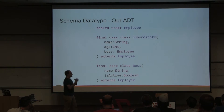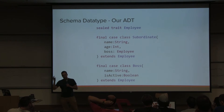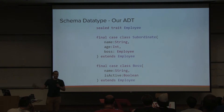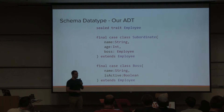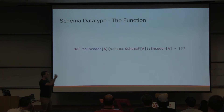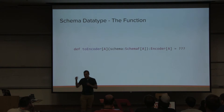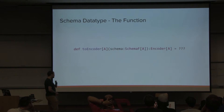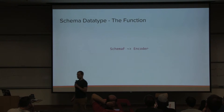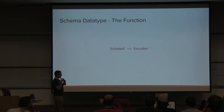Unsurprisingly, the schema itself is also an ADT. Schema F has one type parameter A — the other ADT we want to describe. As an example, we use a non-trivial ADT with two cases, three primitives, and recursion. The style of functions we want to write takes a schema for type A and returns an encoder of that same type. If you squint a bit, that looks like a natural transformation — because it is. If you're familiar with natural transformations, think in those terms.